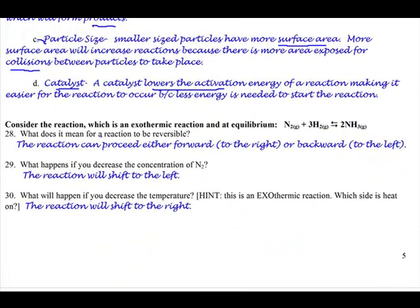Consider the reaction, which is an exothermic reaction, and at equilibrium. So we've got a reaction here. It's an exothermic reaction, so it's going to give off heat. So consider that as one of your products. Then it says, what does it mean for a reaction to be reversible? Well, it means, and you see by this double arrow over here, that it can go this way, and then it can go the other way. So it can keep going back and forth, kind of like a seesaw, depending on what the conditions are.